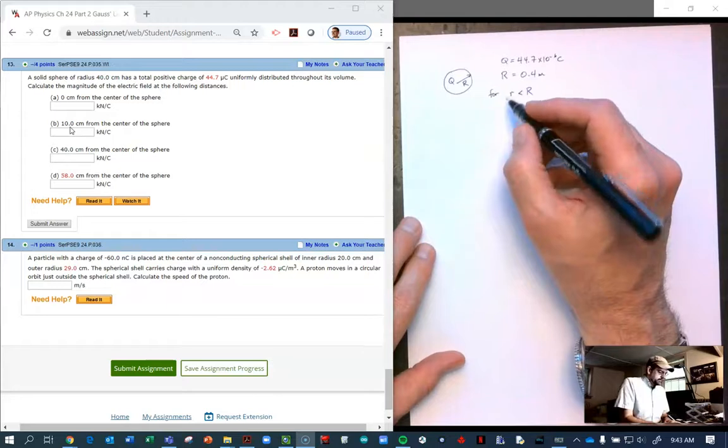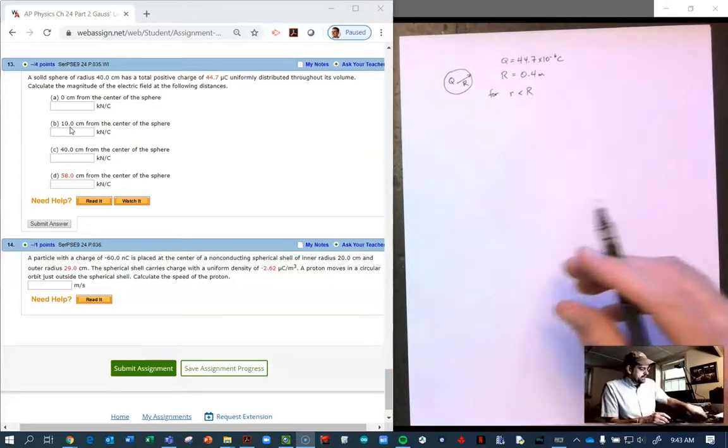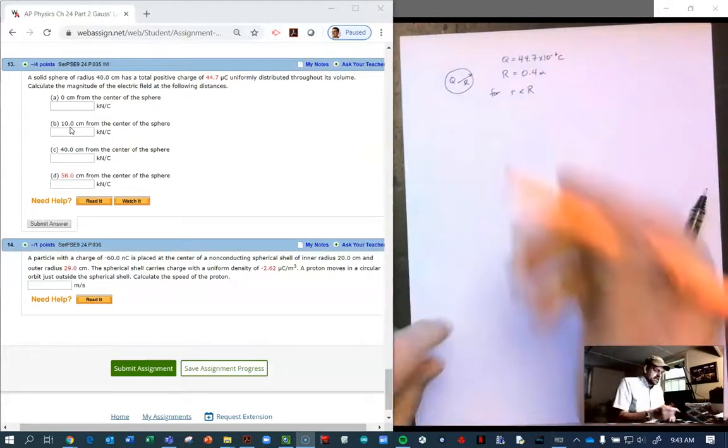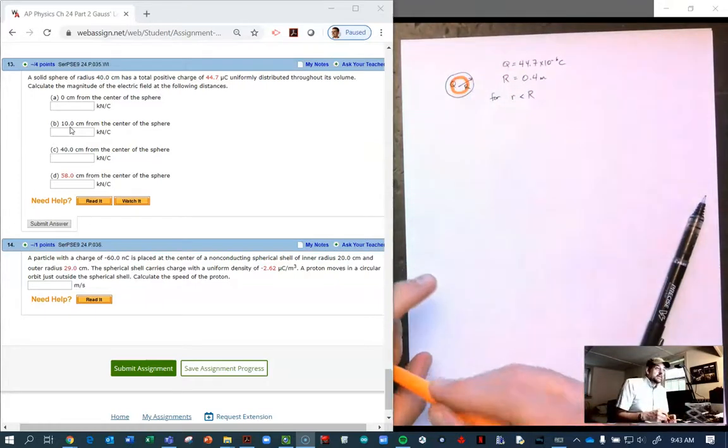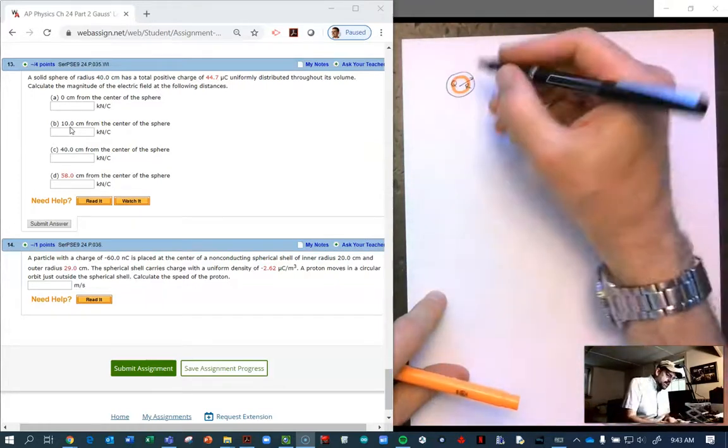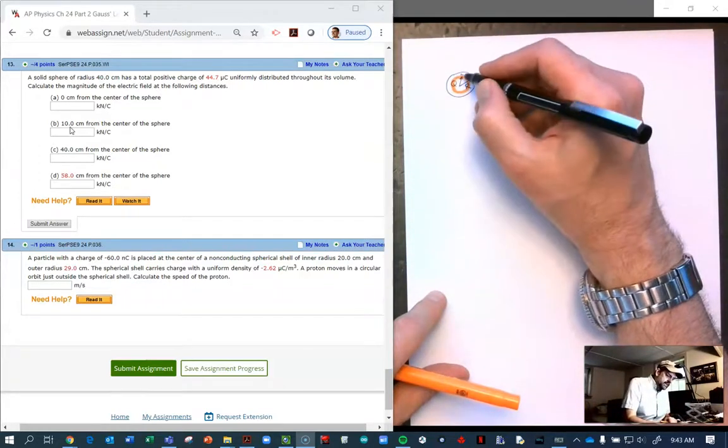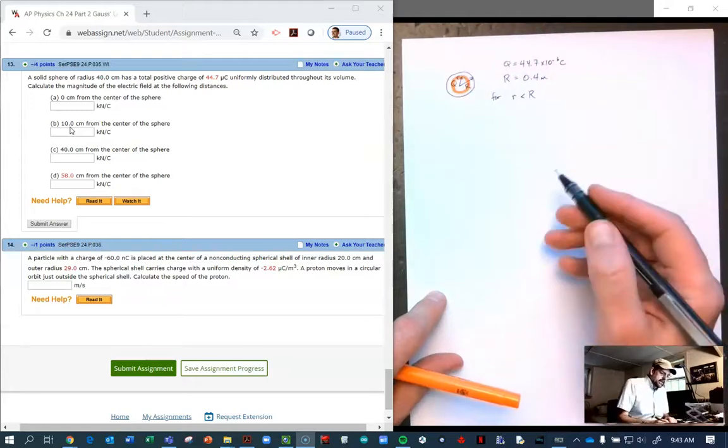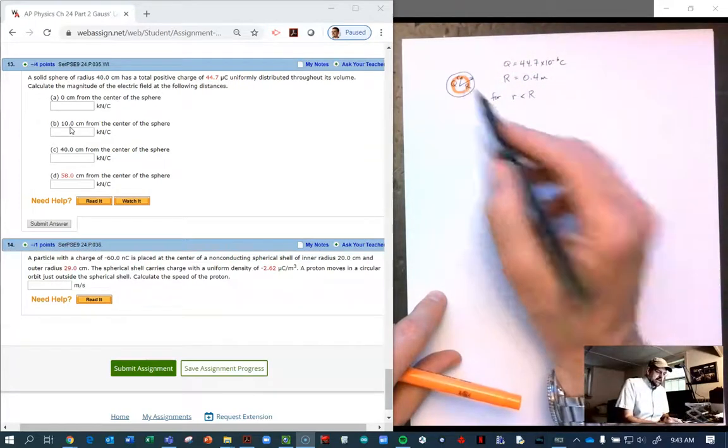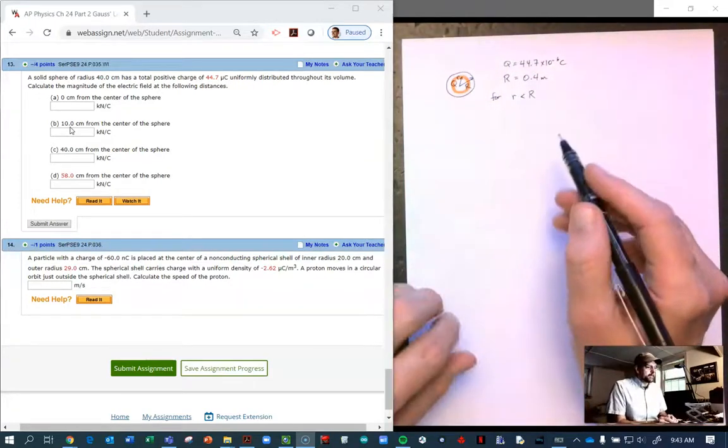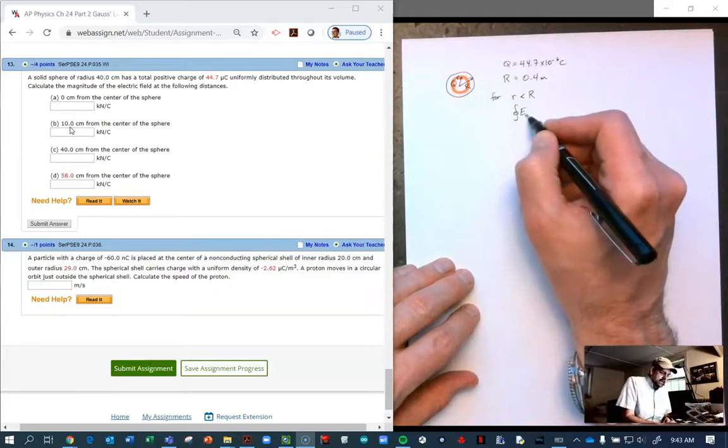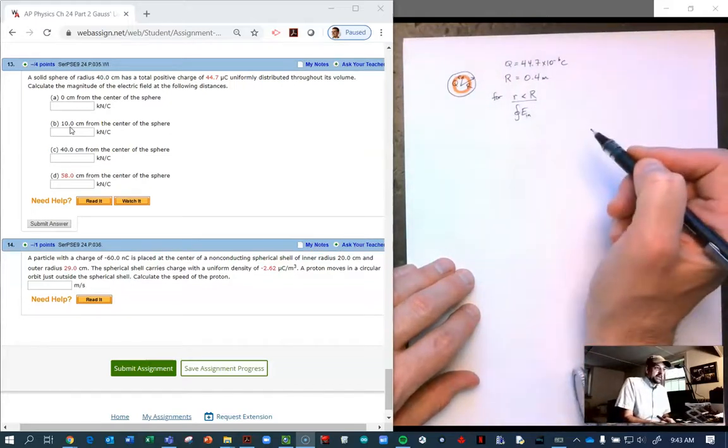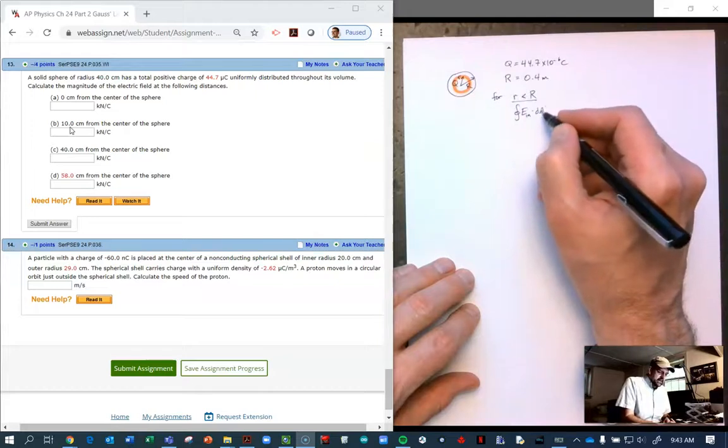Let's actually draw the Gaussian inside there first. I should have drawn my little guy bigger. So let's make this guy be my Gaussian. That's little r, our little r on the inside. And so Gauss's law, E on the inside, because we're talking about that particular situation, dotted into DA, is equal to Q enclosed over epsilon naught.